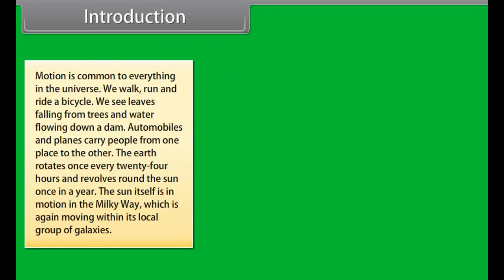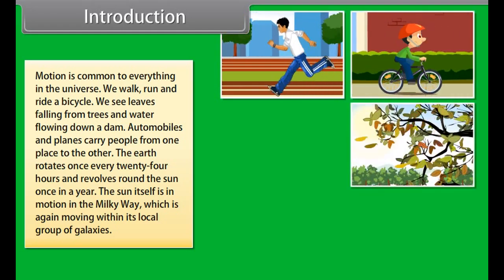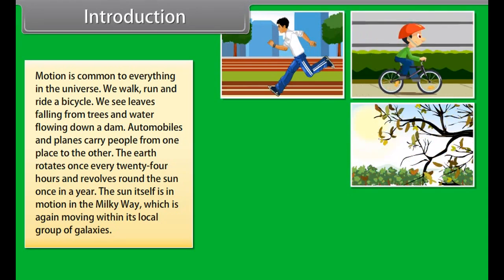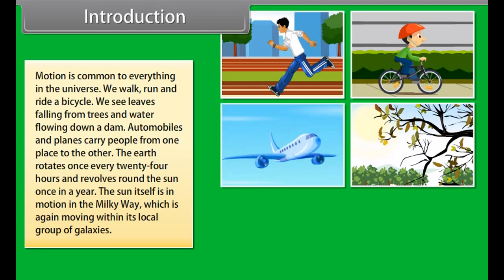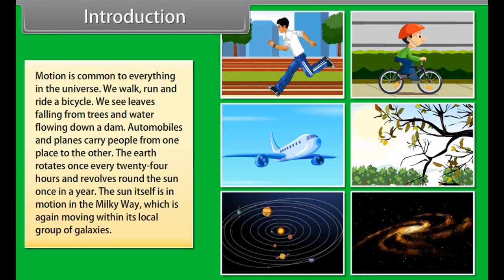Motion is common to everything in the universe. We walk, run, and ride a bicycle. We see leaves falling from trees and water flowing down a dam. Automobiles and planes carry people from one place to another. The earth rotates once every 24 hours and revolves around the sun once a year. The sun itself is in motion in the Milky Way, which is again moving within its local group of galaxies.